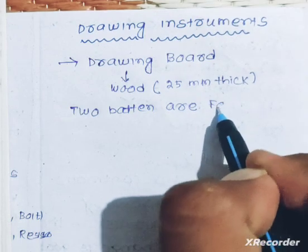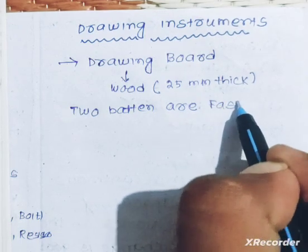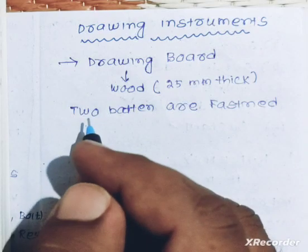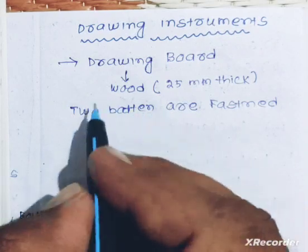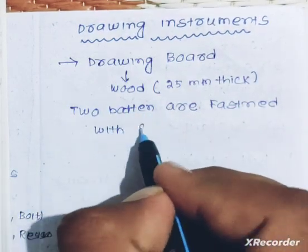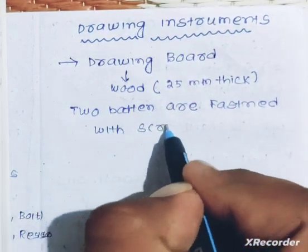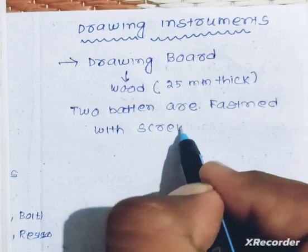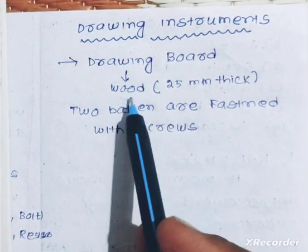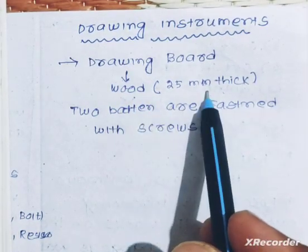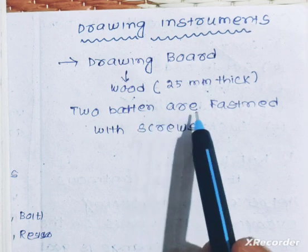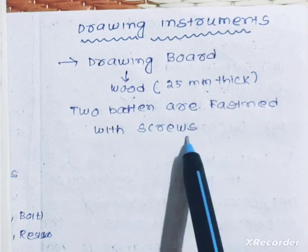Some people are fastened by the drawing board. The back of the sheet is fastened to the drawing board with the help of screws. The back of the sheet is sized, and you put the piece of the sheet with the required thickness. Then the batten is fastened with the screw.